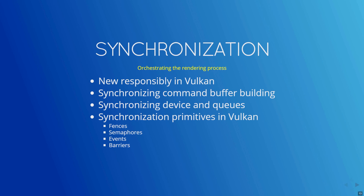Vulkan has a number of synchronization primitives to help. There are fences, which are used to determine the completion of submissions made to queues — after submitting, you simply wait on the fence to become available and continue on. Semaphores, which are used to coordinate operations between queues — for example, to marshal ownership of shared data. Events, used to gauge progress through a sequence of commands. And barriers, which come in several flavors: a pipeline barrier, a memory barrier, and buffer barriers.